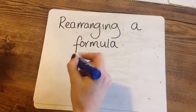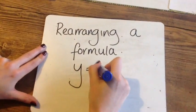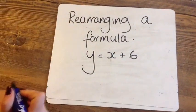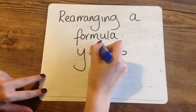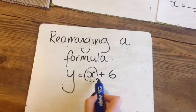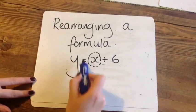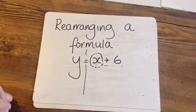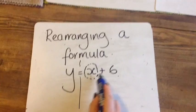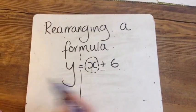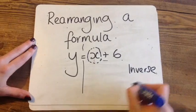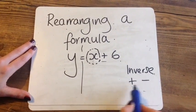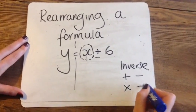Let's say I had the formula Y equals X plus 6. If I want X to be the subject, I'm going to move this 6 to the other side of the equals sign. Don't forget, when you move something, it becomes its inverse. Inverse means opposite. The opposite of add is take away, the opposite of times is divide.